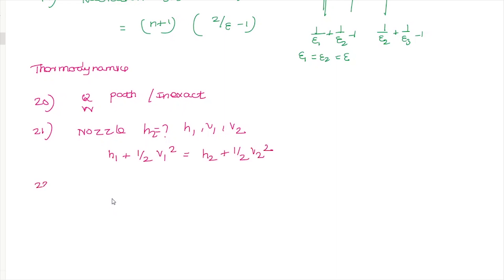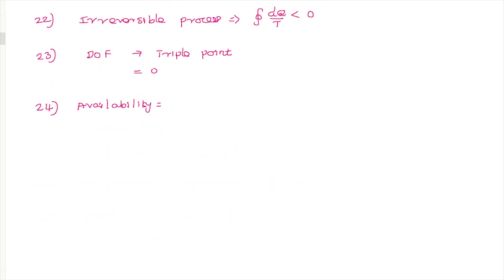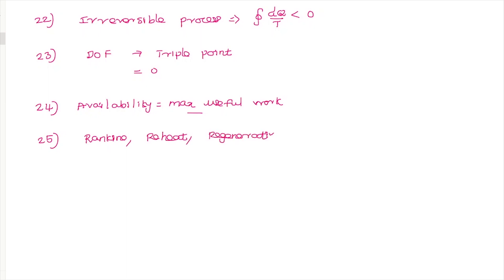For an irreversible process, the condition is dQ/T < 0. The degree of freedom at the triple point is zero. The definition of availability is the maximum useful work obtainable — that is the correct answer. The Rankine reheat cycle and regenerative cycle both increase thermal efficiency. For a compressor, intercooling and reheating are used.